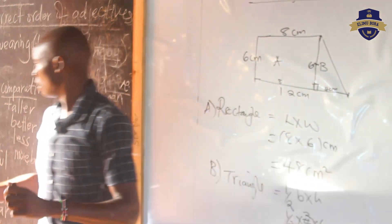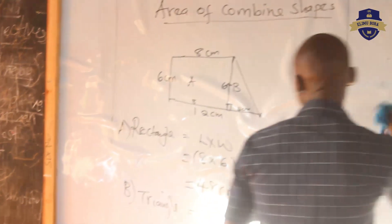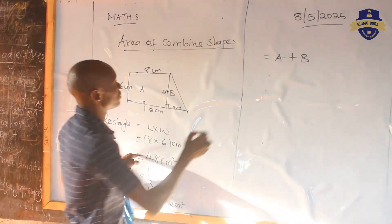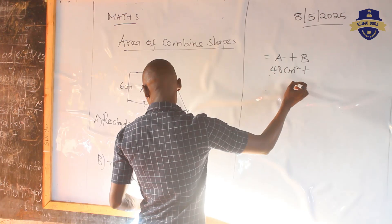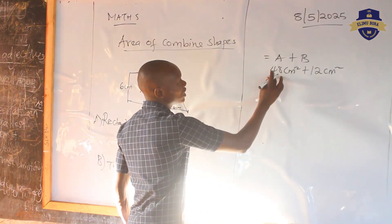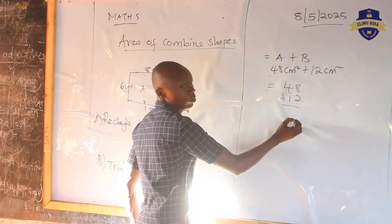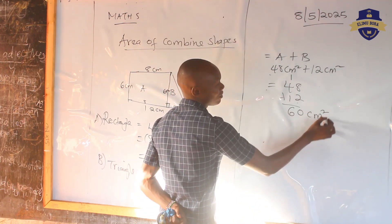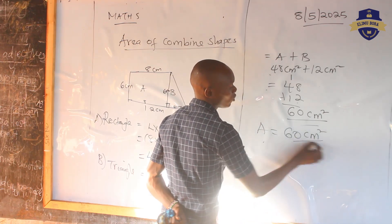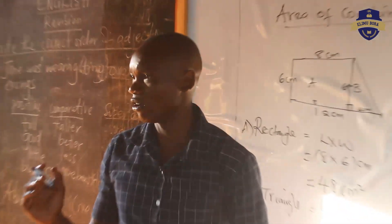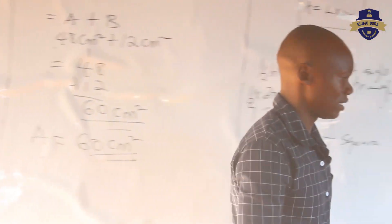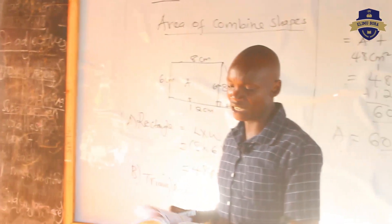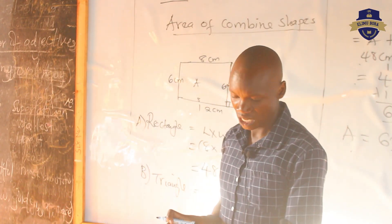Now, to find the area of the combined shape, because we are dealing with two shapes, you take the total area: area A plus area B. Area A was 48 centimeters squared, plus area B which is 12 centimeters squared. What is 48 plus 12? That is 60. So, area is equal to 60 centimeters squared. In mathematics, the most important thing is the method. If you come up with the right method and follow the formula, then calculating the area of combined shapes is not a difficult thing.